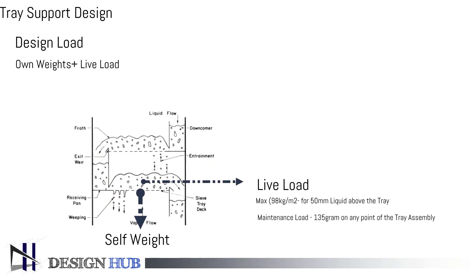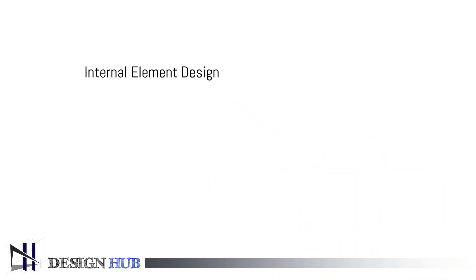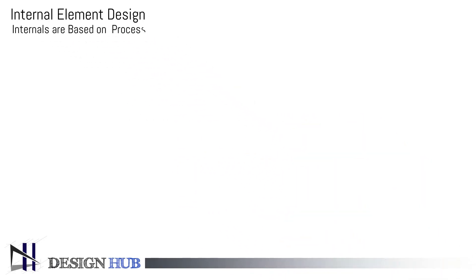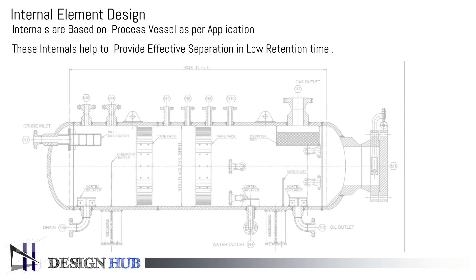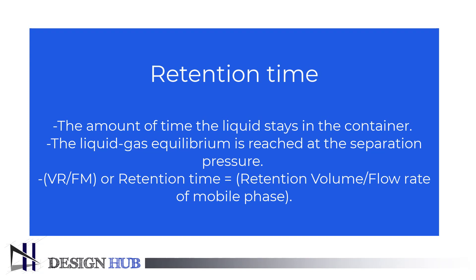Now, let us see the internal element design. The internals of the pressure vessel depend on the purpose of the vessel, and the amount and configuration of the internals will vary accordingly. These internals help in providing effective separation in low retention time. Retention time is defined as the amount of time the liquid stays in the container. The retention time ensures that the liquid-gas equilibrium is reached at the separation pressure, and is determined by dividing the volume of liquid in the container by the flow rate of the liquid.